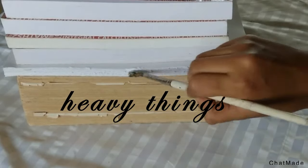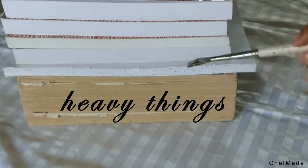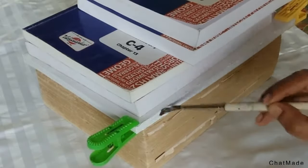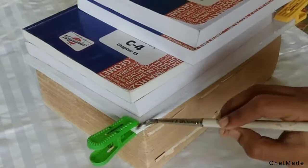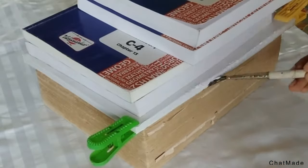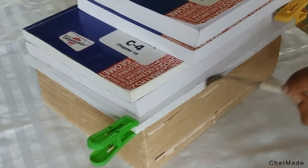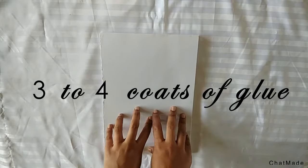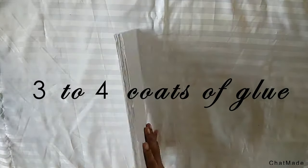You have to use heavy objects to hold the pages while you are applying glue. It is because that is going to squeeze up the pages so the glue is applied properly to each and every page. After applying three to four coats of glue you can see how it worked.